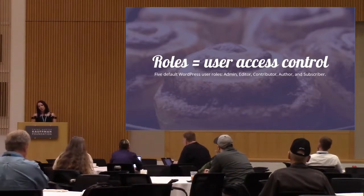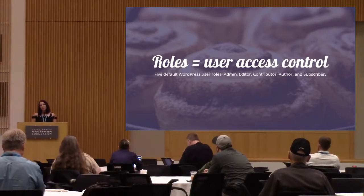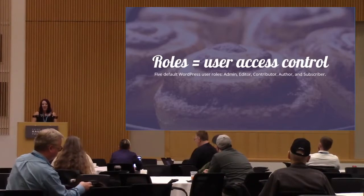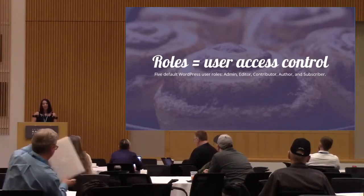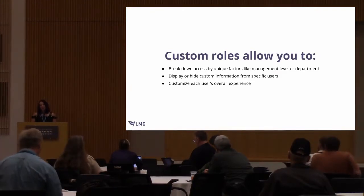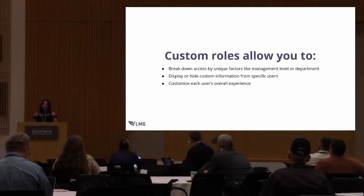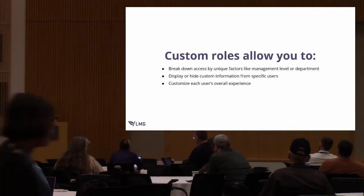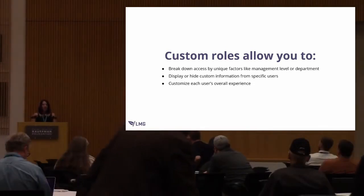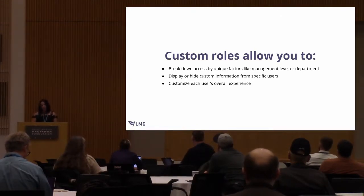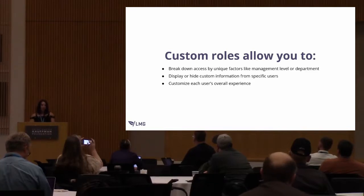The first thing you're going to need to look at is roles, which determine what people can access. There are 5 roles by default in WordPress: admin, editor, contributor, author, and subscriber. Creating custom roles allows you to break down access by more unique factors like management level or department. For example, if you have a larger client with an HR department that needs to access one thing and accounting needs something else, you can break things down this way. It also allows you to display or hide custom information from specific users.